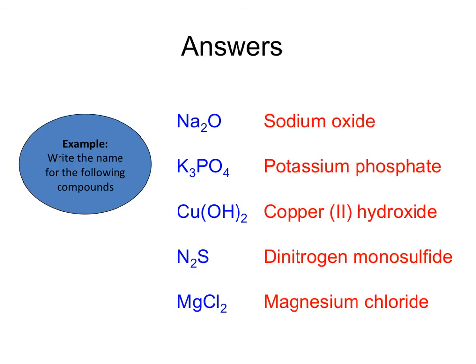So let's take a look at the first example, Na₂O. I know that it is ionic because Na is a metal. I also know that it's binary. So what I'm going to do is I'm going to cut it in half.